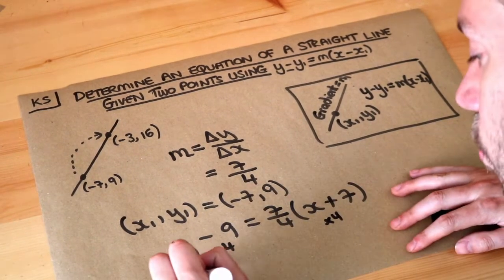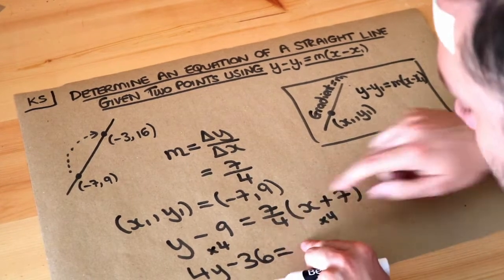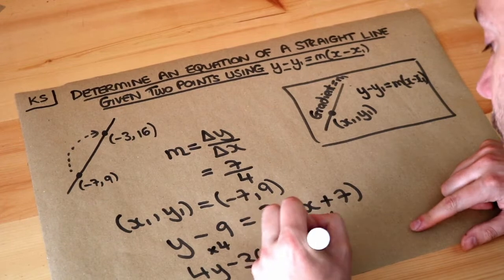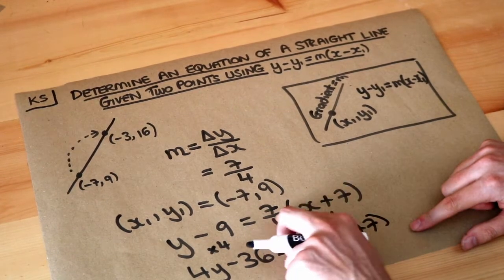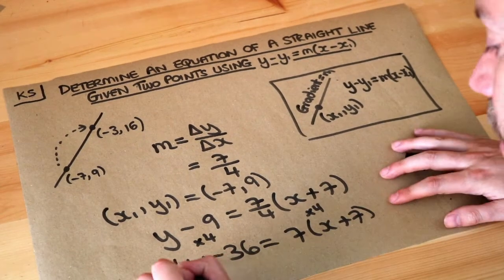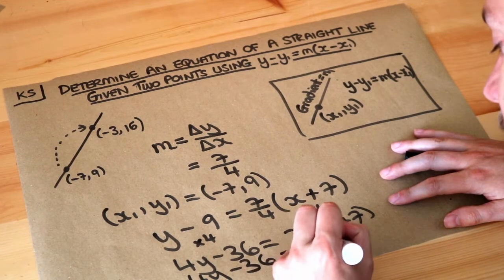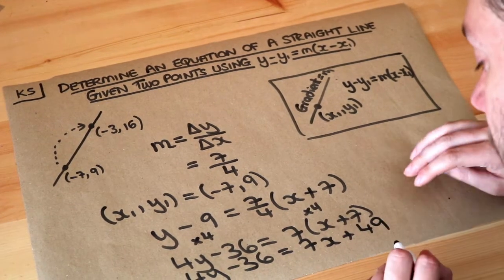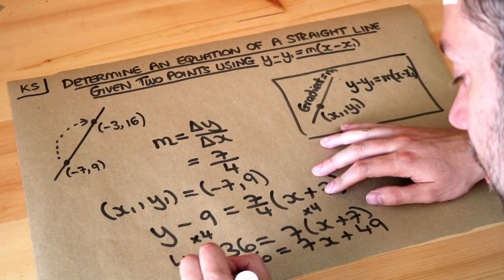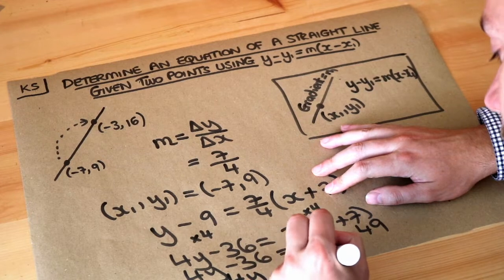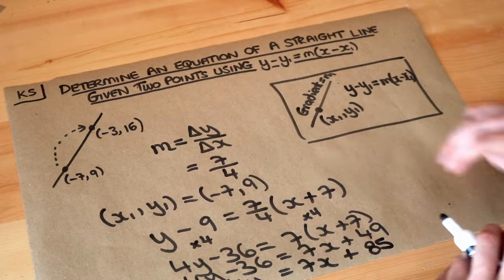Multiplying both sides by 4 gives us 4y minus 36 on the left. On the right, multiplying 7 over 4 by 4 leaves just 7, and we still have the x plus 7. Expanding out and simplifying gives 7x plus 49. Then adding 36 to both sides to clean up: 4y equals 7x plus 85. And that is the final answer.